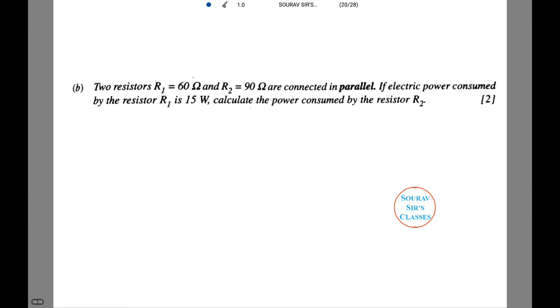This is a very simple question. We are given two resistors R₁ equals 60Ω and R₂ equals 90Ω which are connected in parallel. Notice, it's been highlighted. If electric power consumed by the resistor R₁ is 15 watts, we need to calculate the power consumed by the resistor R₂. Let's see how to do this.